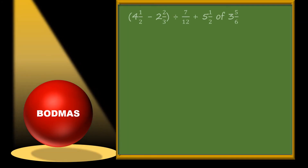Let us take one question and solve it according to BODMAS. Here is 4 and 1/2 minus 2 and 2/3 in a small bracket, divided by 7/12, plus 5 and 1/2 of 3 and 5/6. There is one small bracket, so according to BODMAS we need to solve this bracket first. But before that, we have mixed numbers, so we will convert them into improper fractions.